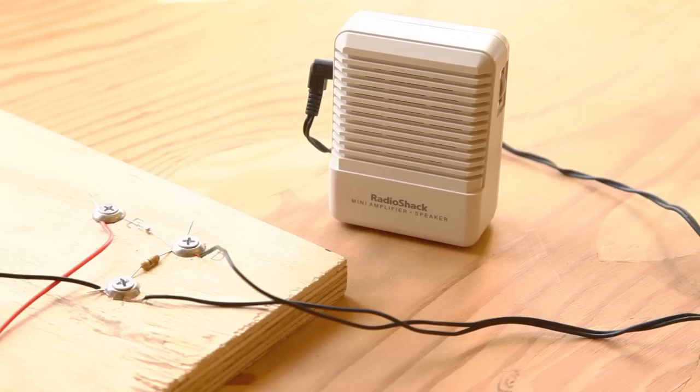If you want others to enjoy your project or simply don't want to wear the crystal earphone all the time, you can swap out the earphone for this battery-powered 9-volt mini amplifier. Simply strip one end of the 3.5 millimeter cable and connect the wires to C and D.